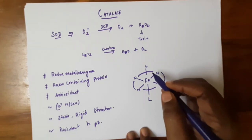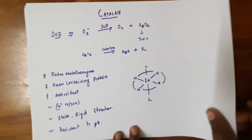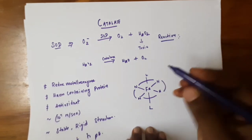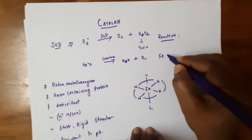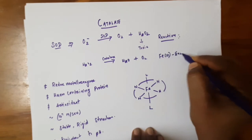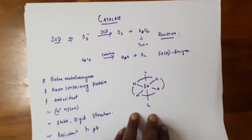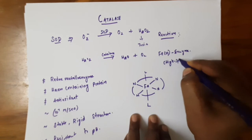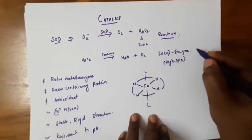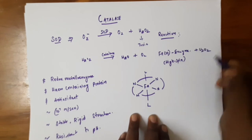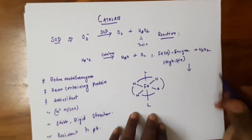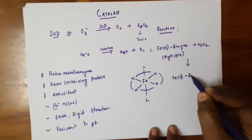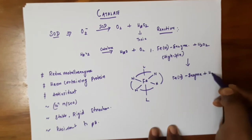In the mechanism of catalase, the iron(III)-containing enzyme in the high-spin state reacts with hydrogen peroxide in the first step, forming water and a porphyrin π-cation radical intermediate.